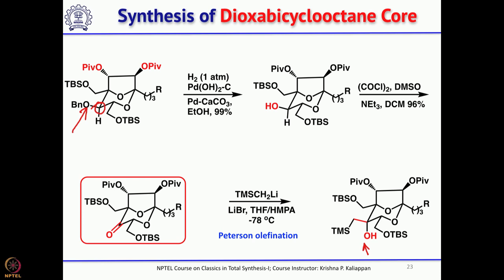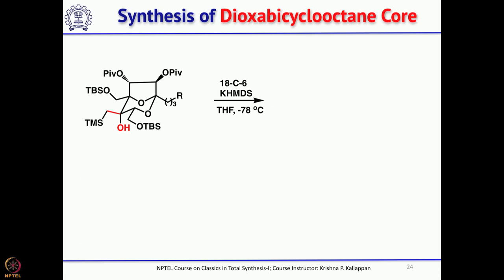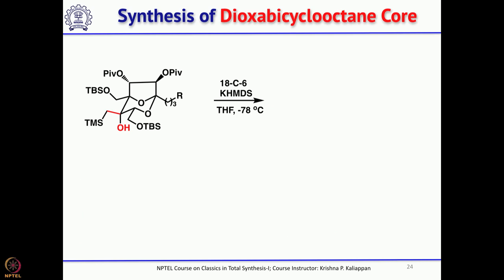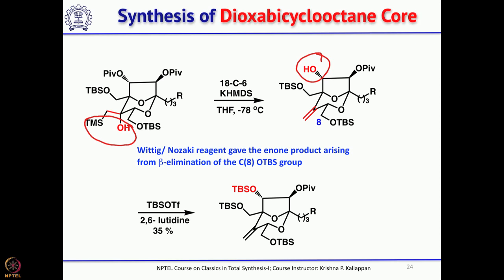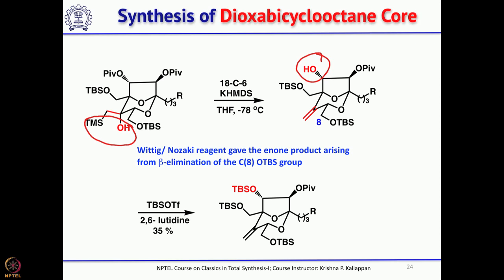Treatment with 18-crown-6 and potassium hexamethyldisilazide triggers elimination to install the exocyclic double bond — the Peterson olefination. During this step, one of the pivalate esters was also hydrolyzed, so the free secondary hydroxyl group was re-protected as a TBS ether.